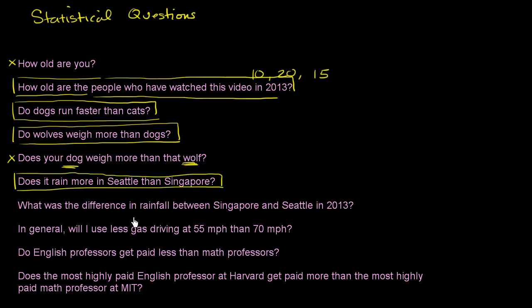What was the difference in rainfall between Singapore and Seattle in 2013? These two numbers can be measured. The rainfall in Singapore can be measured, the rainfall in Seattle can be measured, and assuming this has already happened, we can find the difference directly. You don't need statistics here — you just need both measurements and subtract them. Not a statistical question.